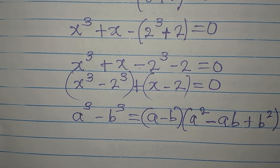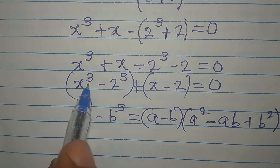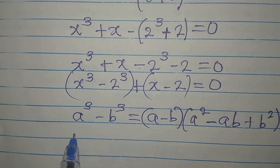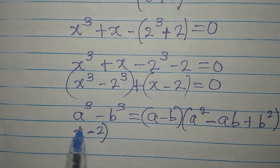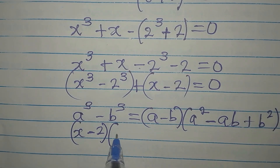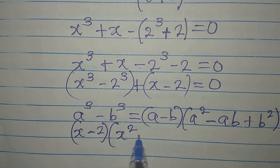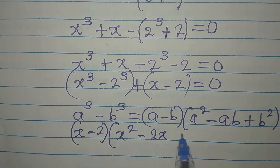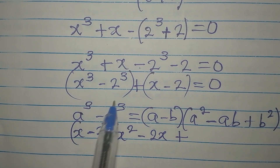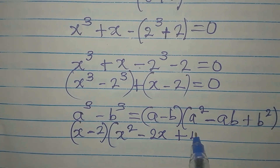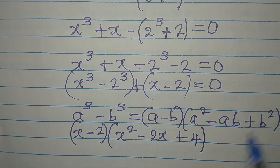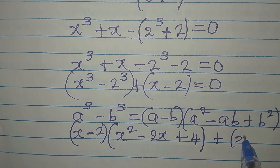Applying the difference of cubes formula here, our (a - b) becomes (X - 2), and the second factor becomes a² - ab + b², which is X² - X·2 + 2² = X² - 2X + 4. Then we still have the remaining term plus (X - 2).